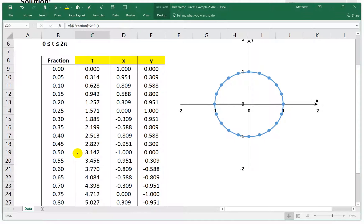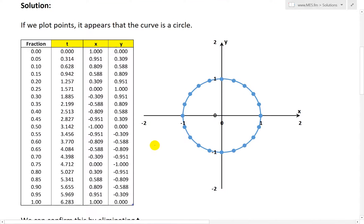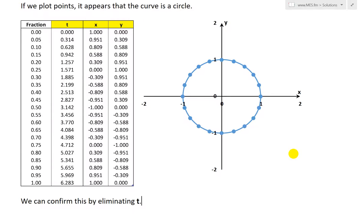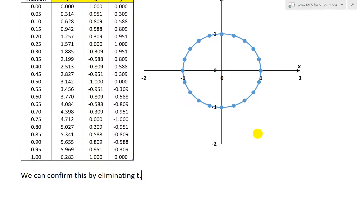And as you can see, what we have is this curve right here. And I've plotted the x and y's. This one's cosine of t, this one's the sine of t, et cetera. And then I've plotted them. It looks like a circle. So if we plot the points, it appears that the curve is a circle. In fact, it is actually a circle.